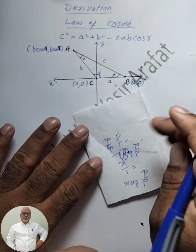So this gives us c squared equals a squared plus b squared minus 2ab cos gamma. This is called the law of cosines. Similarly, b squared equals a squared plus c squared minus 2ac cos beta, and a squared equals b squared plus c squared minus 2bc cos alpha. These are the three forms of the law of cosines.